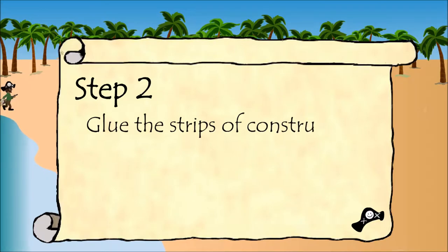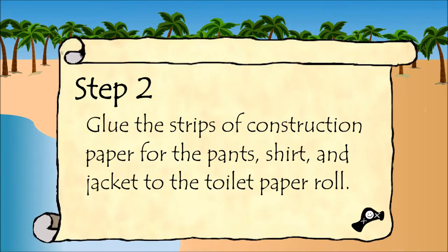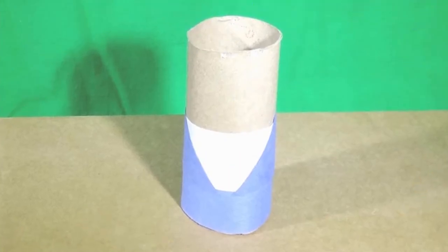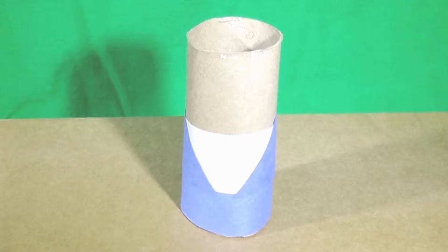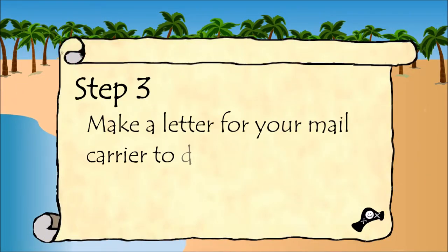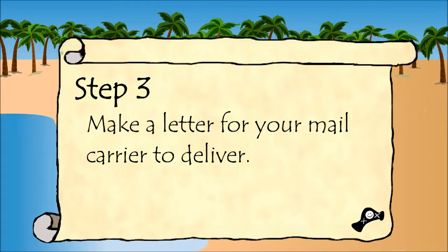Step two: glue the strips of construction paper for the pants, shirt, and jacket to the toilet paper roll. Step three: make a letter for your mail carrier to deliver.